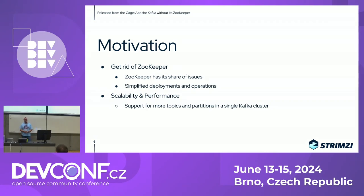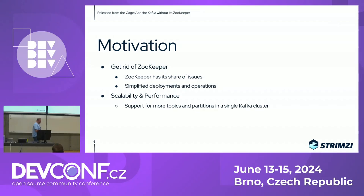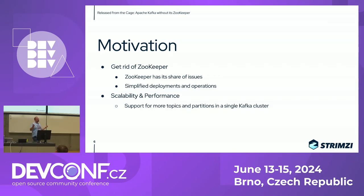The other big motivation is around scalability and performance. Kafka is already super scalable and performant, but why not make it even better? The big difference isn't necessarily that a small cluster will suddenly be twice as fast. It's more about the number of topics and partitions large clusters can handle — instead of tens of thousands of topic partitions, handling millions of them.